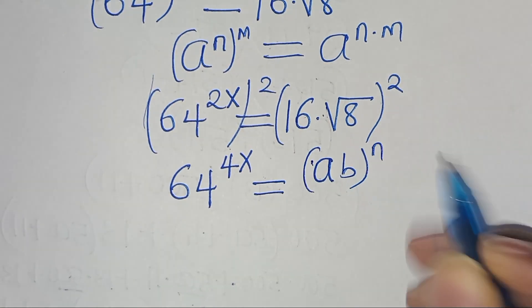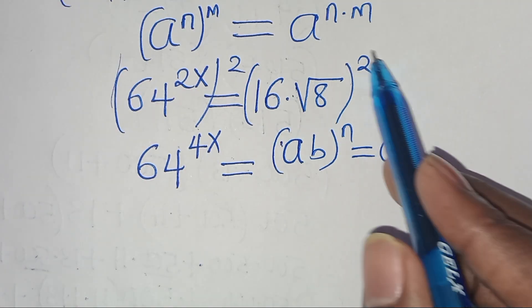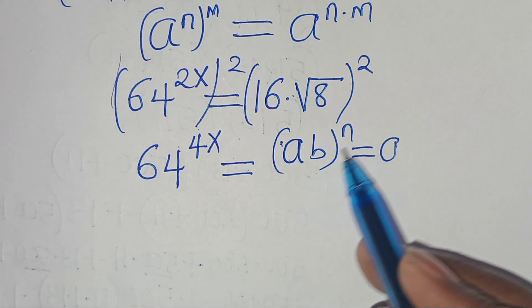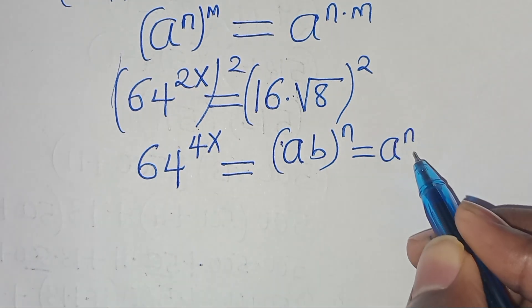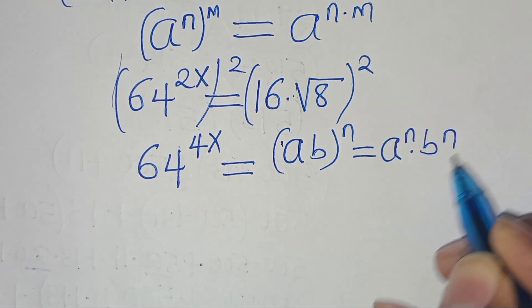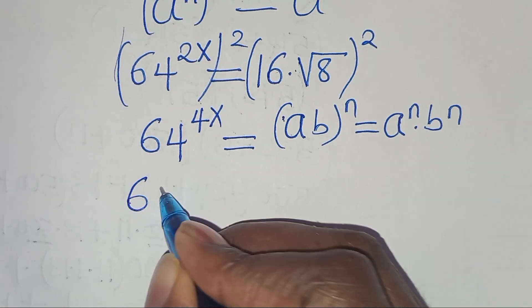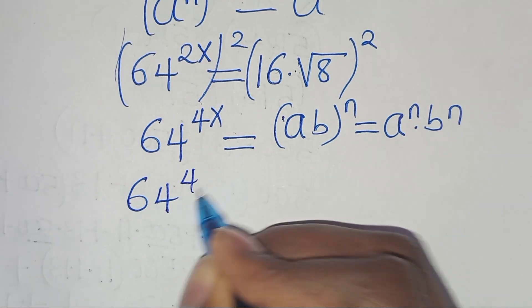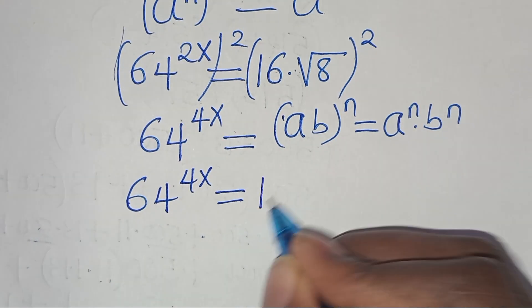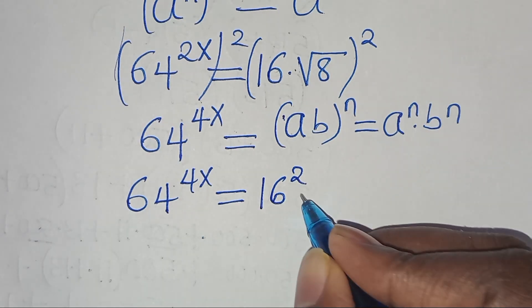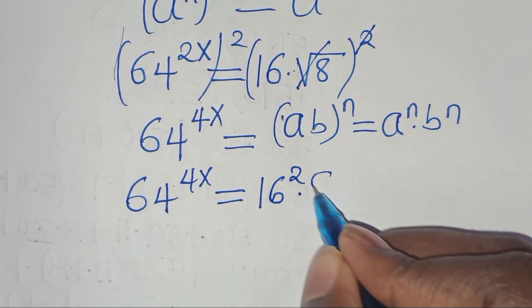Now, 16 times square root of 8, raised to the power of 2, this is in the form of a times b raised to the power of n, which we can express as a to the power of n times b to the power of n. Applying this exponent property, then we have 64 raised to the power of 4x, this is equal to 16 raised to the power of 2, times — let's reinstate the square root sign — so that we have 8.